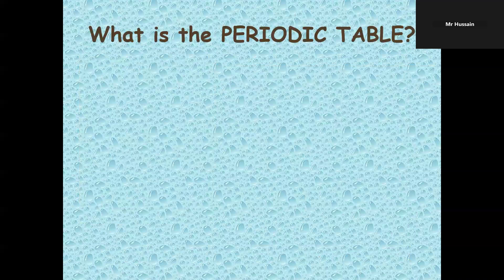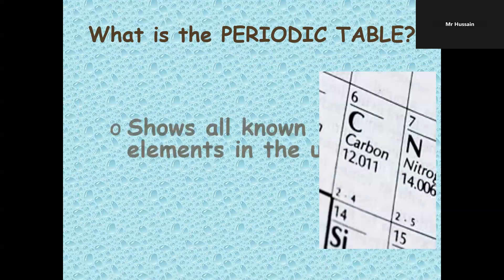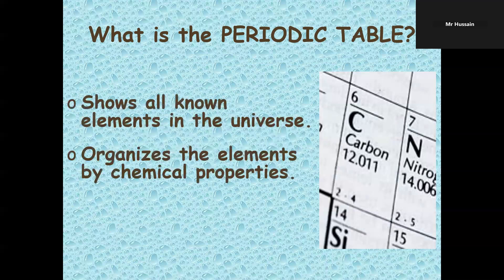What is the periodic table? The periodic table shows all known elements in the universe and organizes the elements by their chemical properties.